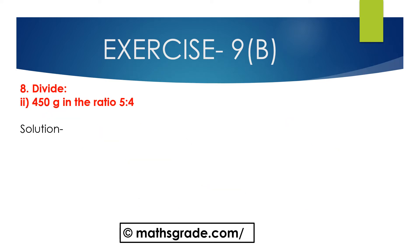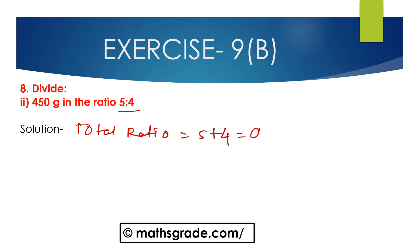Now we will solve question number 2: Divide 450 grams in the ratio 5 is to 4. First we have to find the sum of the ratios. The total ratio is 5 plus 4, which is equal to 9.